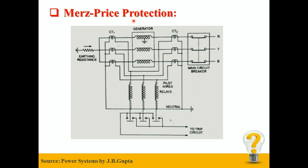Merz-Price Protection: The schematic arrangement of the differential protection scheme of a three-phase generator is shown in the figure. There are two identical sets of CTs; each set is mounted on either side of the stator phase winding of the generator. The secondaries of the CT sets are connected in star, and their ends are connected through the pilot wires. The relays are connected across the equipotential points of the pilot wires, as you can see in the figure.